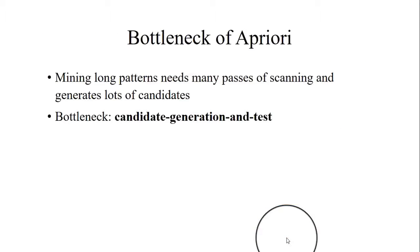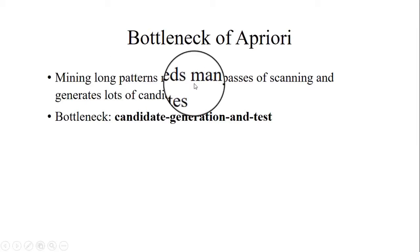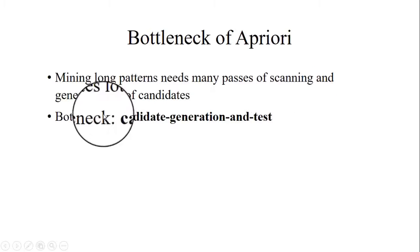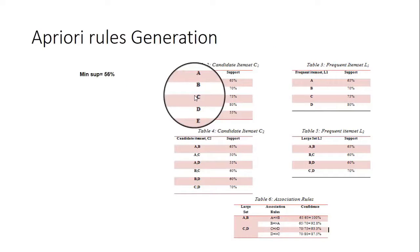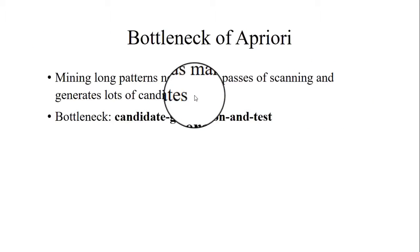What are the bottlenecks of the Apriori algorithm? Mining long patterns requires many passes of scanning and generates a lot of candidate sets. The most important bottleneck is the candidate set generation — for large datasets, it takes a huge amount of time to generate those candidate sets.